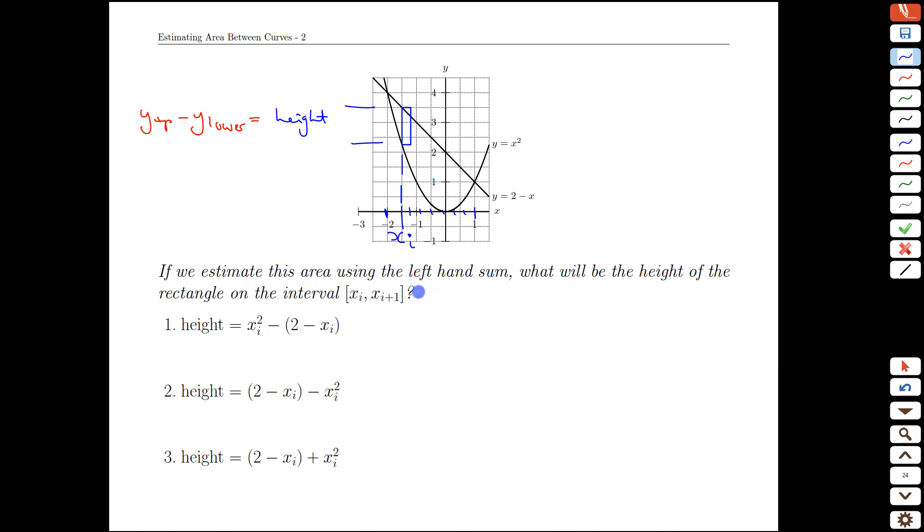Well the upper y value belongs to the curve 2 minus x so we're going to need a 2 minus x as the starting point and then we're going to subtract off the coordinate on the parabola which is the x squared. So this function here is going to give us the height of this rectangle no matter what x value we plug in. This may seem a bit counterintuitive.